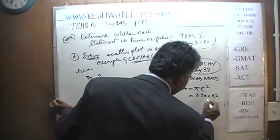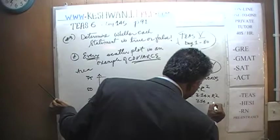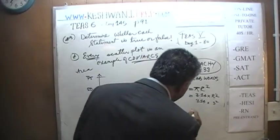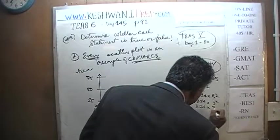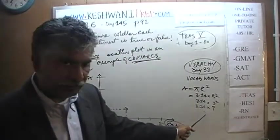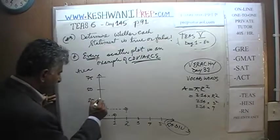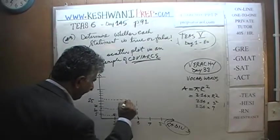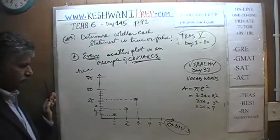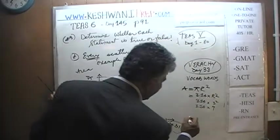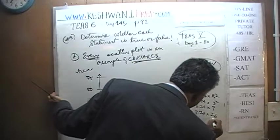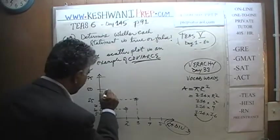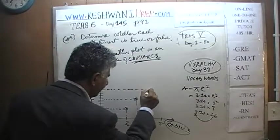When the radius is 4, it's 3.14 times 16. 3 times 16 is 48, so it's going to be around 50. This is all from yesterday's work.